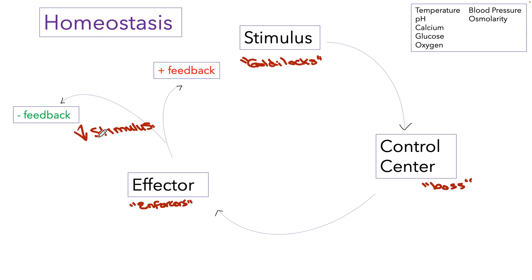But occasionally, some systems, the effectors do things to increase the stimulus, to make the stimulus actually higher. And that's called positive feedback. Positive and negative don't relate to whether it's good or bad for the body. It's just really whether you're increasing or decreasing the stimulus. Increasing the stimulus is positive feedback. Decreasing the stimulus is negative feedback. So these are our main components: stimulus, control center, effector. But we were missing some stuff.